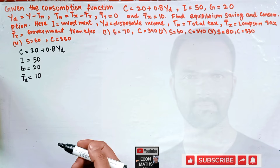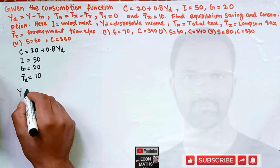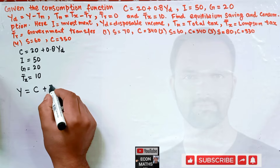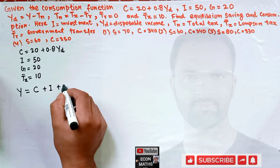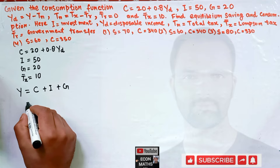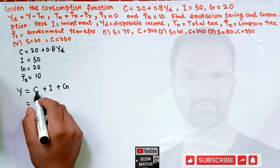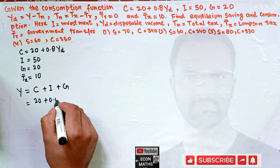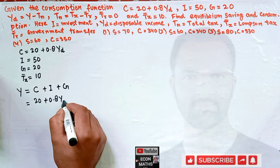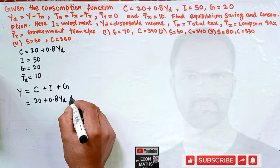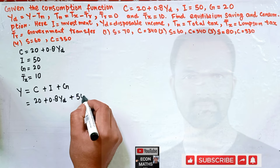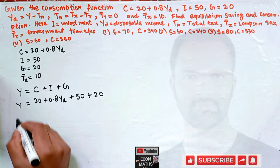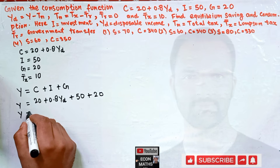Now, our output equation: total income or output Y = C + I + G. Substituting the consumption function, we get Y = (20 + 0.8·Yd) + 50 + 20.